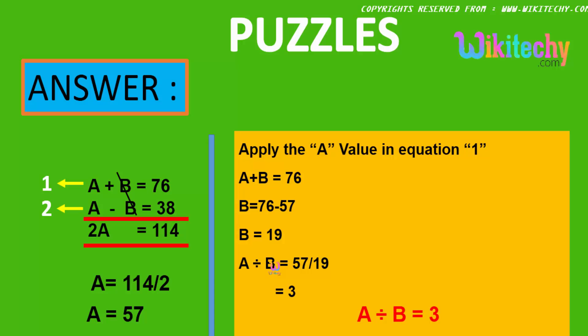A divided by B is the question we got. 57 divided by 19, the answer is 3. This is the final answer.